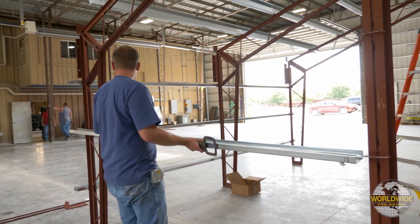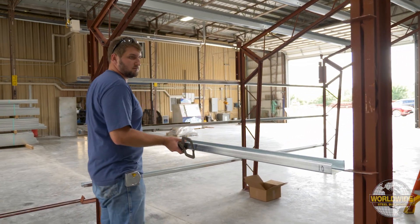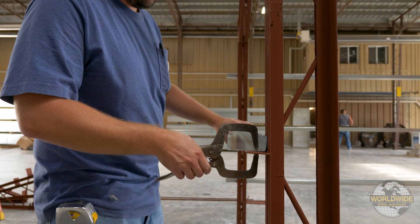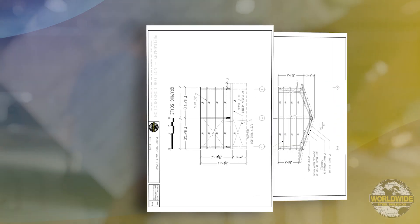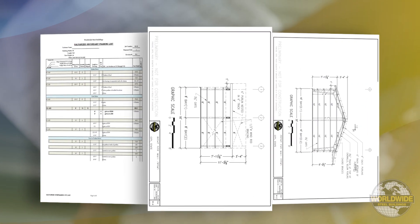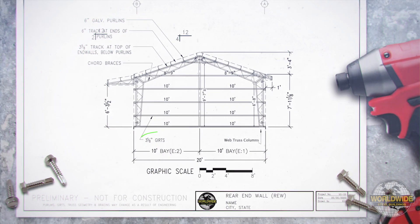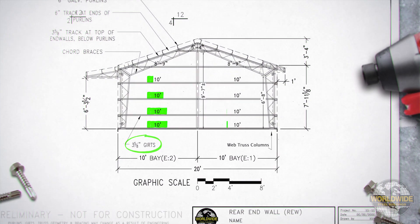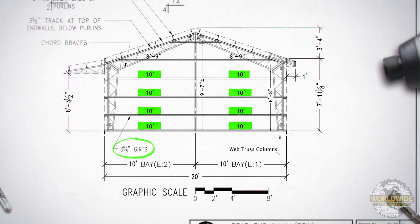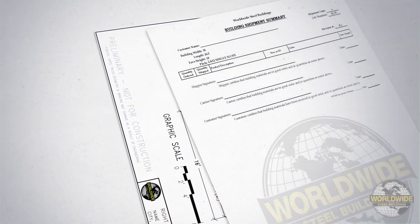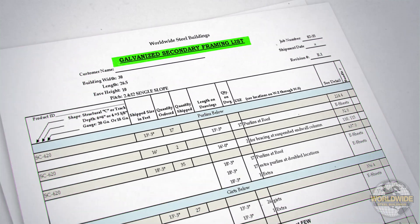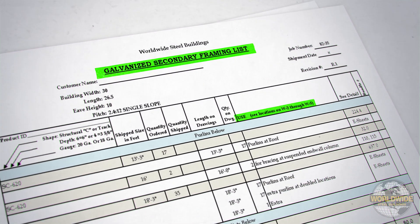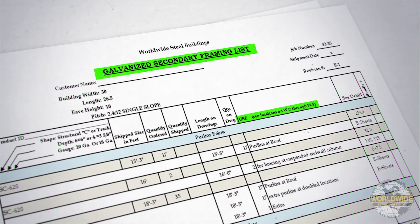When installing girths along the end wall of your building, it is important to make sure that you have the correct girth for each location. Your W drawings and ship list will show you which girths should be used and where they should be placed in your building. On the galvanized secondary framing list, you will have the location, or use, for each secondary member.